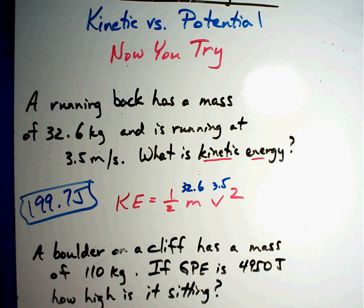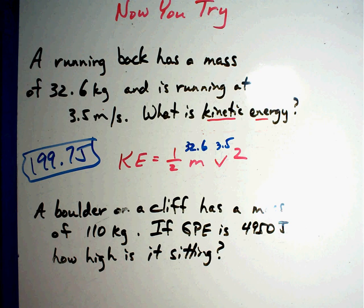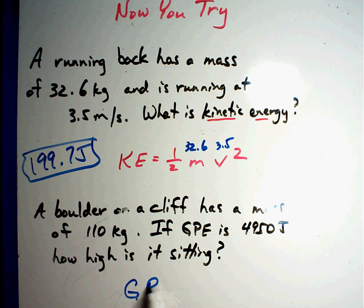Let's see how you did on the bottom one. A boulder is on a cliff with a mass of 110 kilograms. If the gravitational potential energy is 4,950 joules, how high? That's the height. Gravitational potential energy equals mass times gravity times height. So we'll plug numbers in.